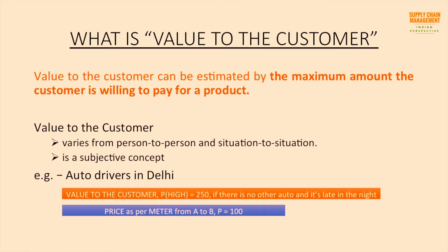The number 250 might be different for you — it's used here because that's what has been paid in similar situations. Now in a situation where there is enough competition in the market, an auto driver might charge you even 70 rupees. So in this example, for a particular person, 250 is the maximum amount the customer is willing to pay for that particular ride.